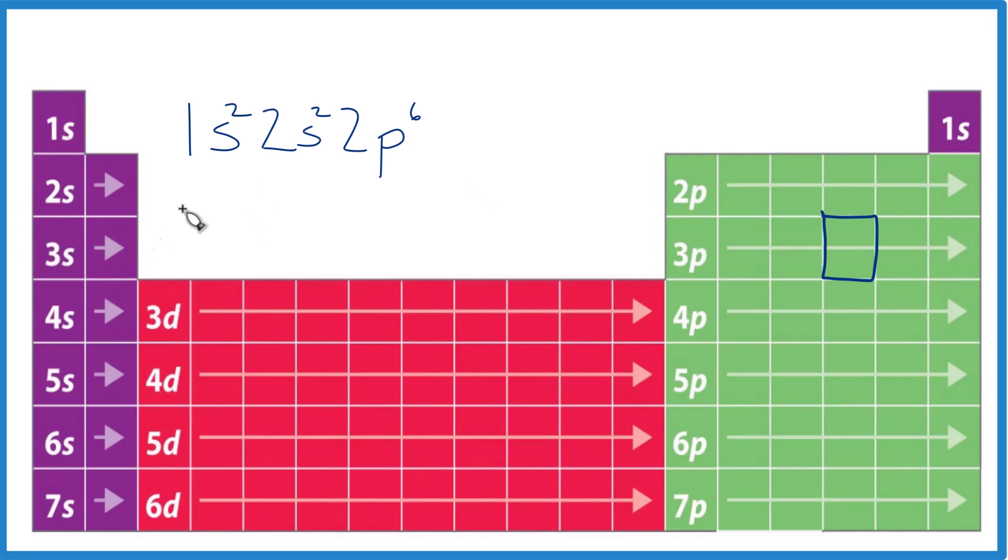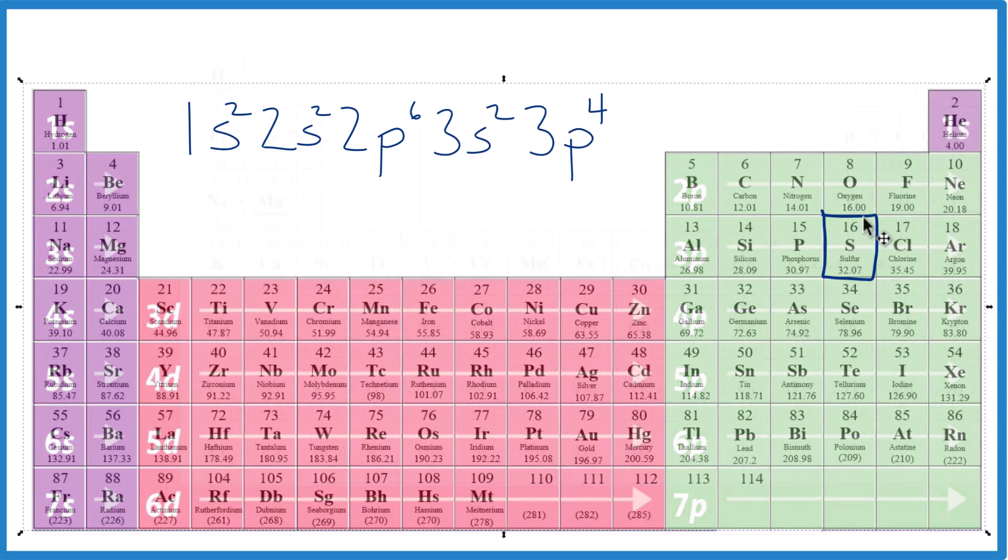Third energy level, 3s1, 3s2. And then we come over here, 3p1, 2, 3, 4, 3p4, and you are done. That's the correct electron configuration for sulfur. And if you count these numbers up, those are the electrons. 16, the atomic number for sulfur.